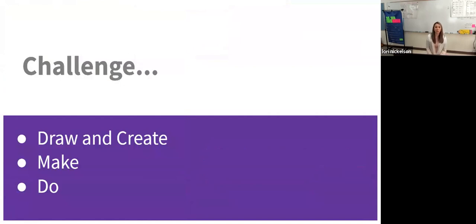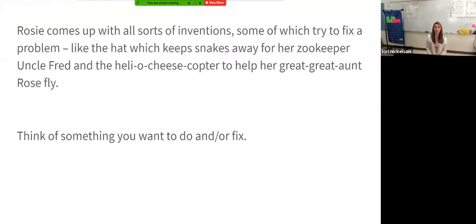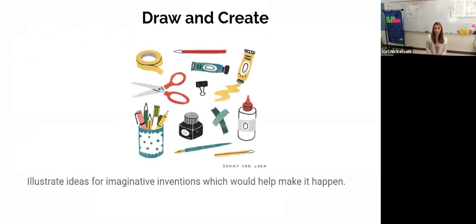Rosie comes up with all sorts of inventions, some of which solve a problem, like the hat that keeps the snakes away for zookeeper Uncle Fred, and the Helio Cheese Copter for her great-great-aunt Rose to fly. I want you to think really hard about something that you would like to do, or something that you would like to fix. Maybe something in your house that is broken, or something that you want to make better. Next, I want you to illustrate and draw and create that. Think about how you can fix it. Think of a sketch, or a pattern, or a blueprint that you can make to show steps on how you want to fix or put that item together. That's challenge one.